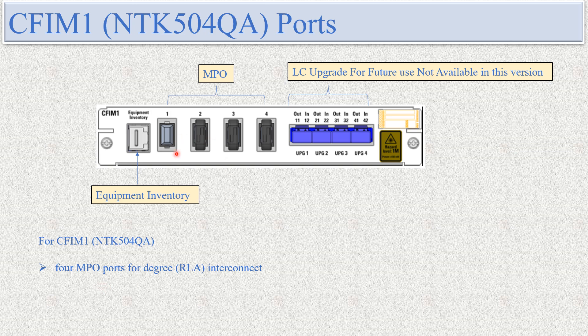CFM1 features: CFM1 are passive modules and therefore do not require DC power — they don't require any external power or electric current. CFM1 provides pass-through interconnection between RLAs. From one CFM1, we can connect four RLAs, but all four RLAs must be in the same quad group. CFM1 is used to pass through traffic within the same quad degree. Four MPO ports for degree interconnect, four duplex LC upgrade ports for expansion.